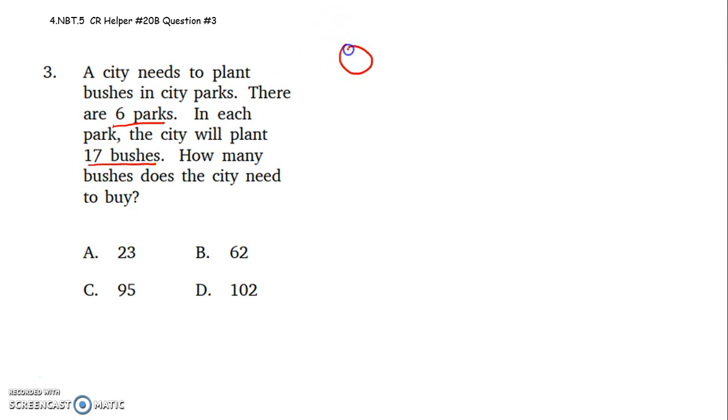So they have six parks. One, two, three, four, five, six parks. They're going to plant 17 bushes in each of those six parks.